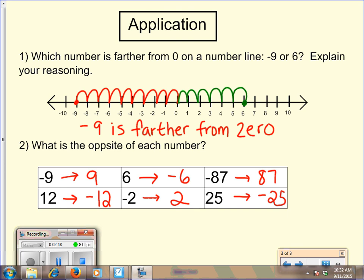As you can see, negative nine is farther from zero on the number line. Negative nine is nine spaces away from zero and positive six is only six spaces. So although negative nine is a negative number, it's still further away from zero.